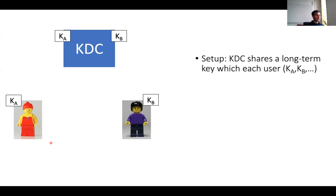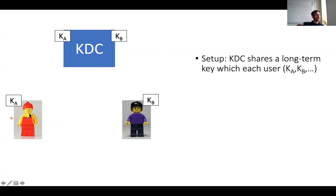A key distribution center is a trusted authority or trusted service running on your network. The setup is that the KDC shares a long-term key with every user in the system. In this picture, the KDC has key KA shared with Alice, and key KB shared with Bob. Importantly, if there are N users, the KDC stores N keys, but every user only needs to store one long-term key — the one they share with the KDC. This is already much more scalable: Alice doesn't need to worry about how many users are in the system.